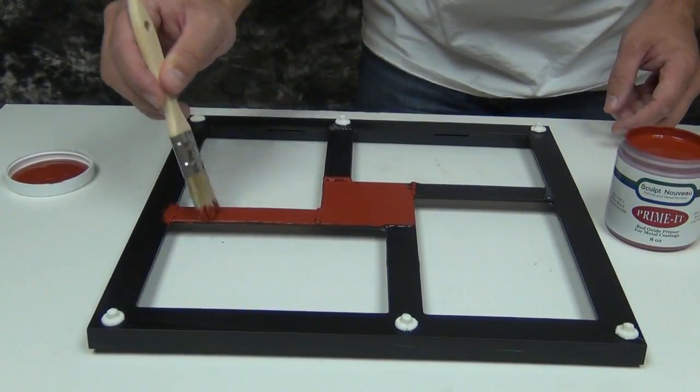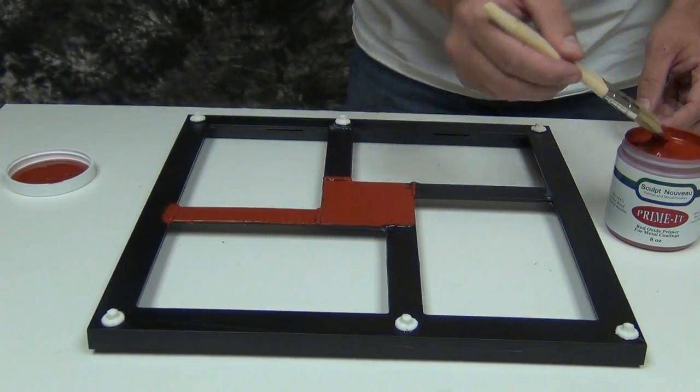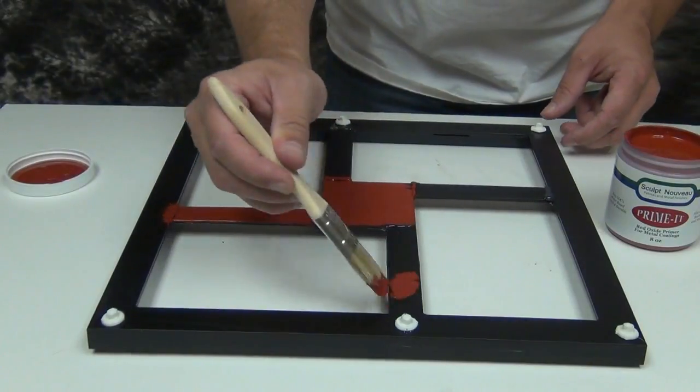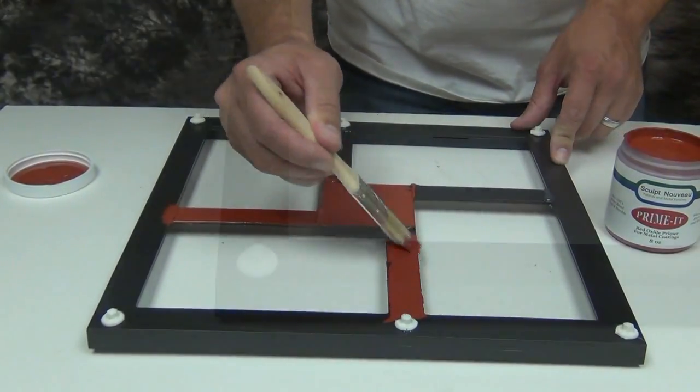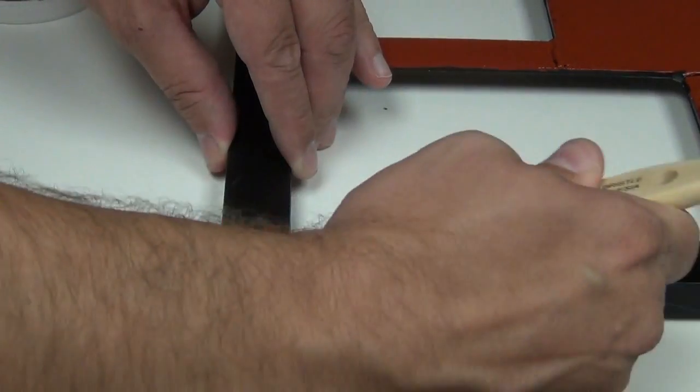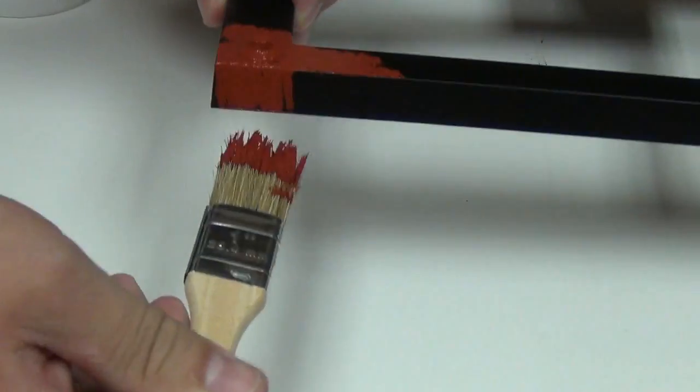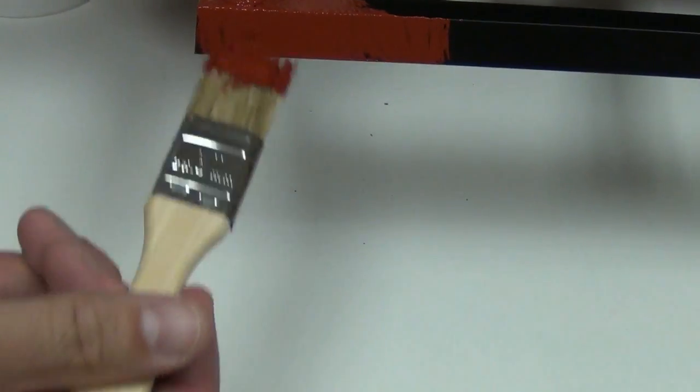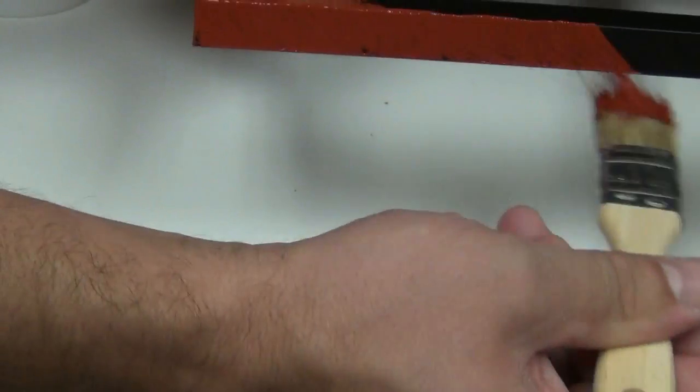For this frame we're applying this with a brush, but keep in mind you can also spray this on using an HVLP gun. I usually prefer to use an HVLP sprayer, but on something this small it just makes much more sense to brush this on.